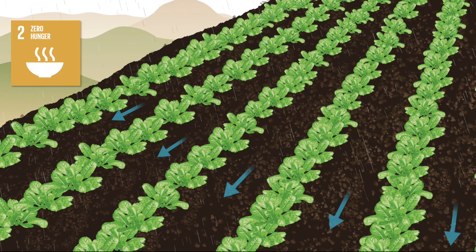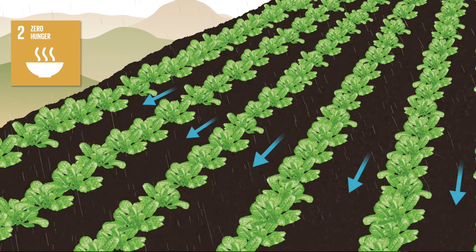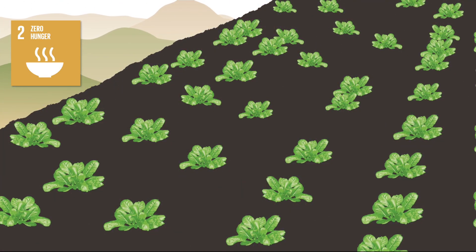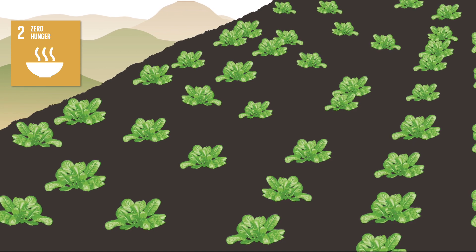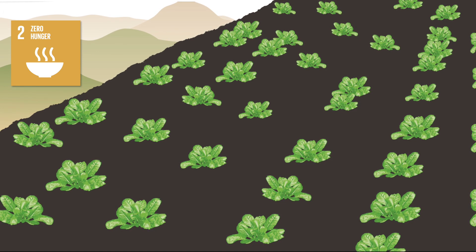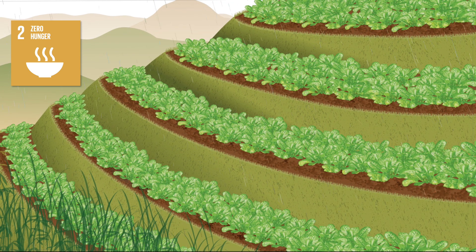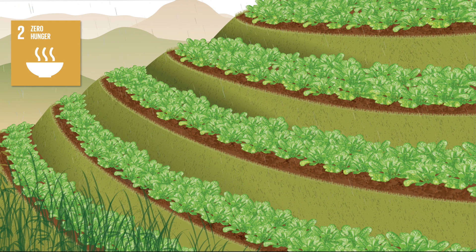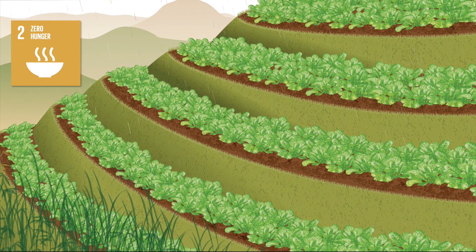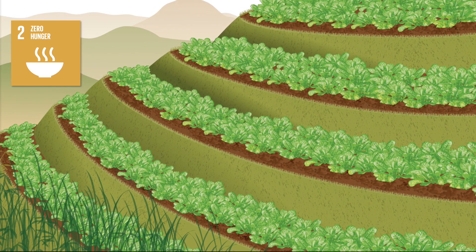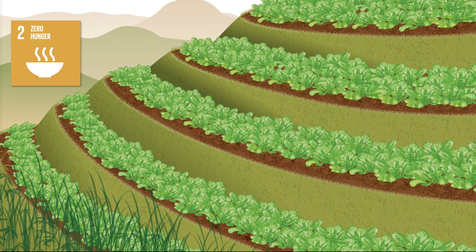This means that wherever possible, practices such as farming following the direction of the slope — which can cause soil erosion — should be substituted with sustainable practices like terracing or the construction of grass strips across the slope, following the elevation contour lines of the land.